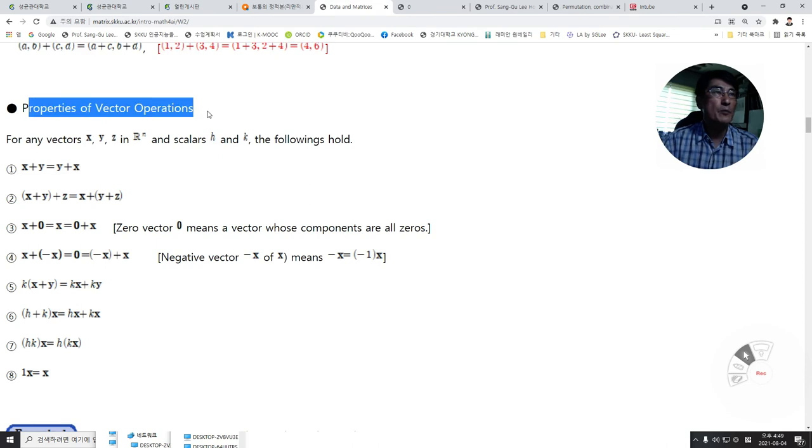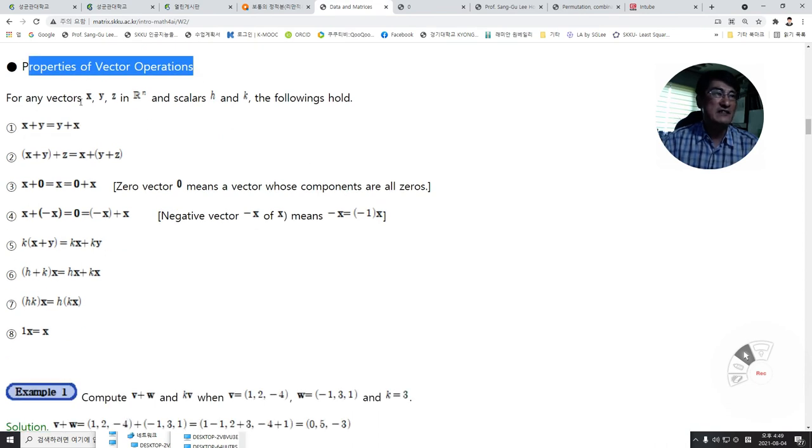Properties of vector operations. For any vectors x, y, z in Rn and scalars h and k in real numbers, the following hold: the commutative law for addition, associative law for addition.